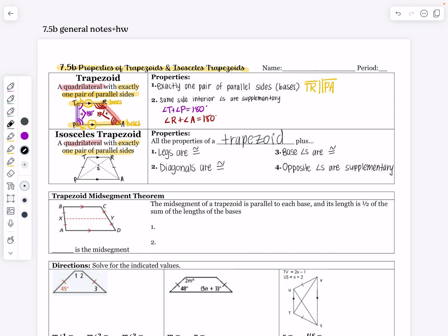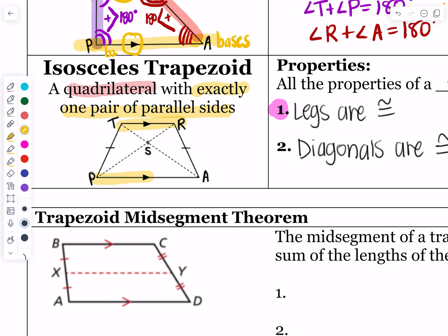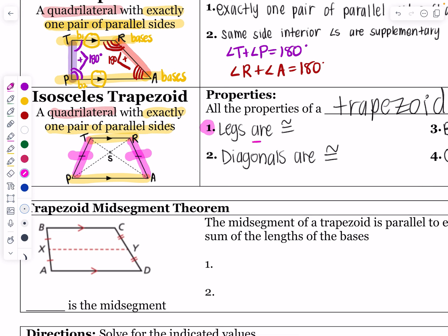It's kind of like saying I've got the broad group of dogs, but then I have Australian shepherds as types of dogs. Isosceles trapezoids are specific types of trapezoids. The most important part to mark is that in an isosceles trapezoid the legs are congruent — marked the exact same length. So TP is going to be congruent to RA.